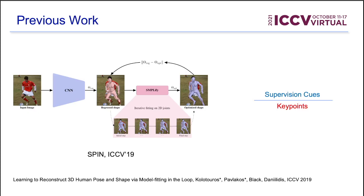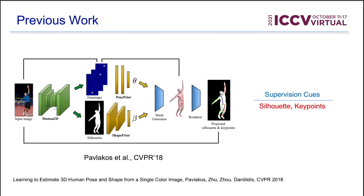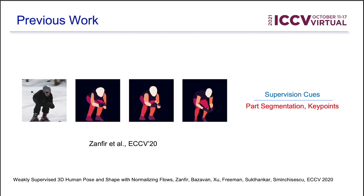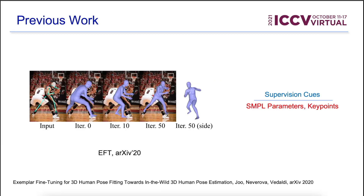Previous methods like SPIN estimate the 3D human body by employing optimization in the loop with the regressor method, supervising using 2D and 3D key points. Pavlikas et al. use silhouettes and key points in a regression model. Sanfer et al. use weak supervision with normalizing flows, and additionally use part segmentation for supervision. EFT uses an overfitting method to generate pseudo-ground truth for regression methods, using SMPL parameters and key points for supervision.